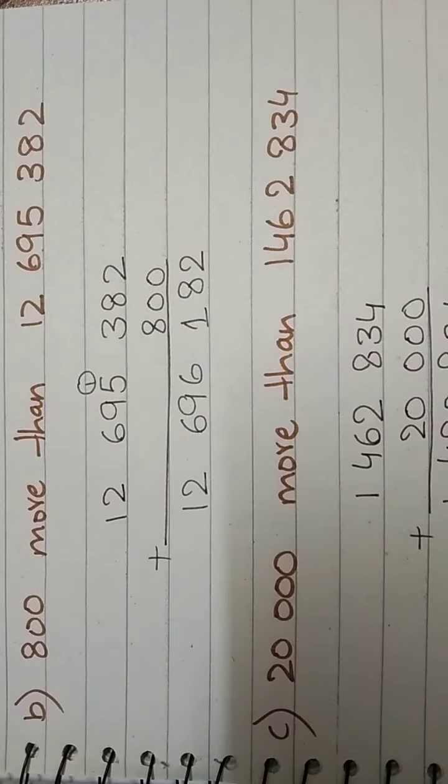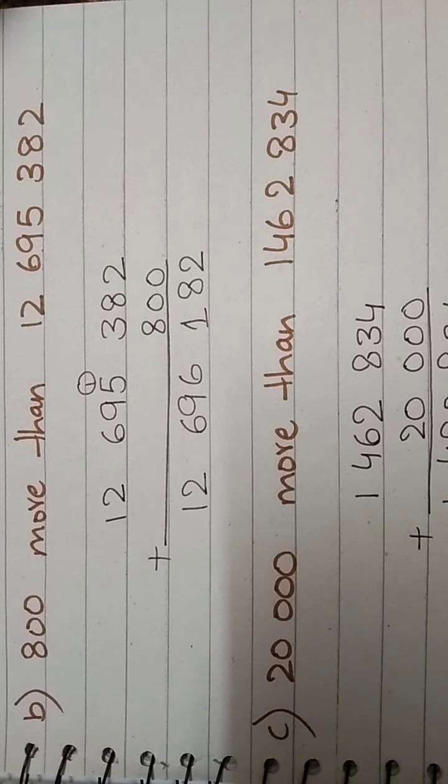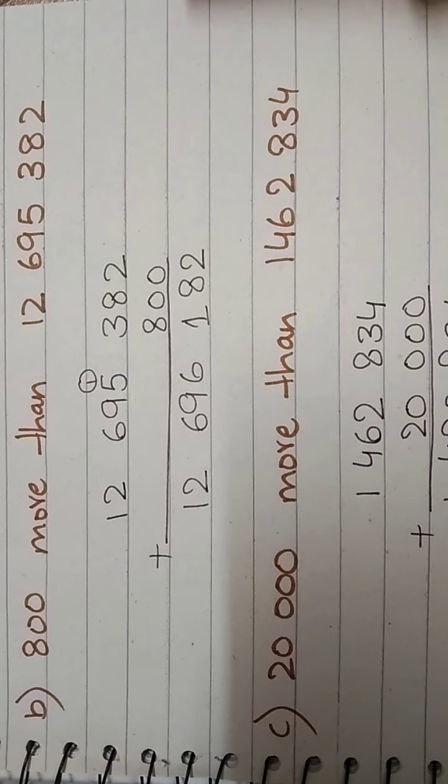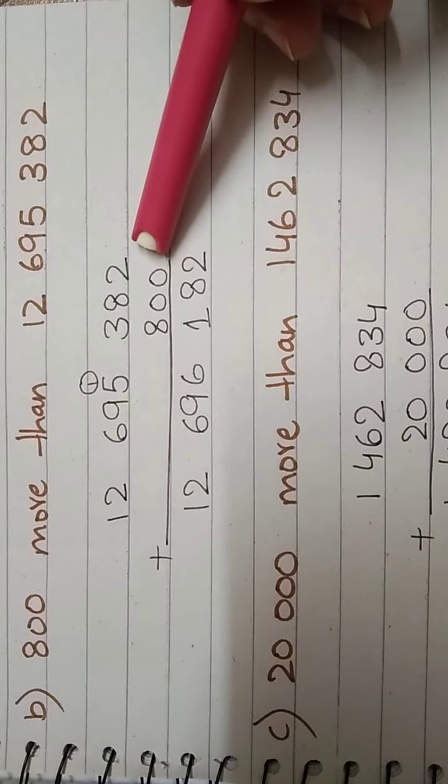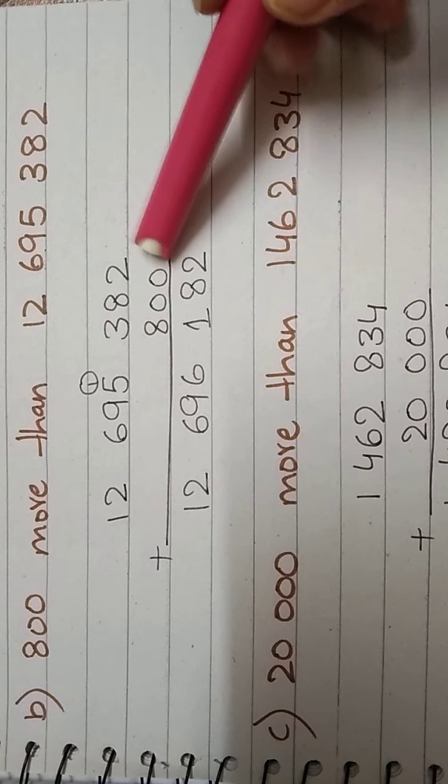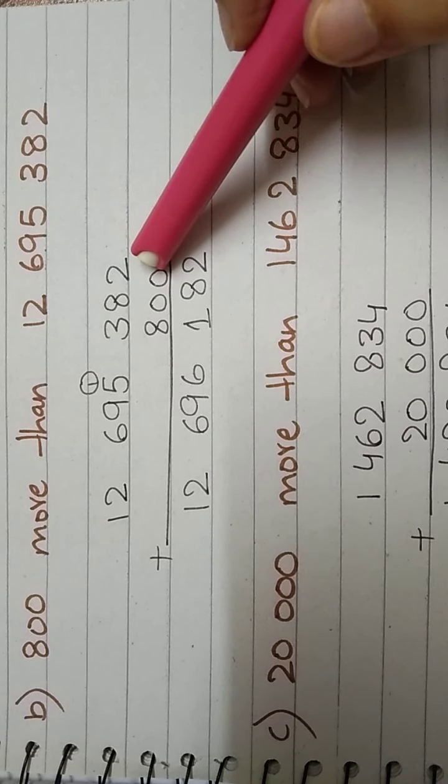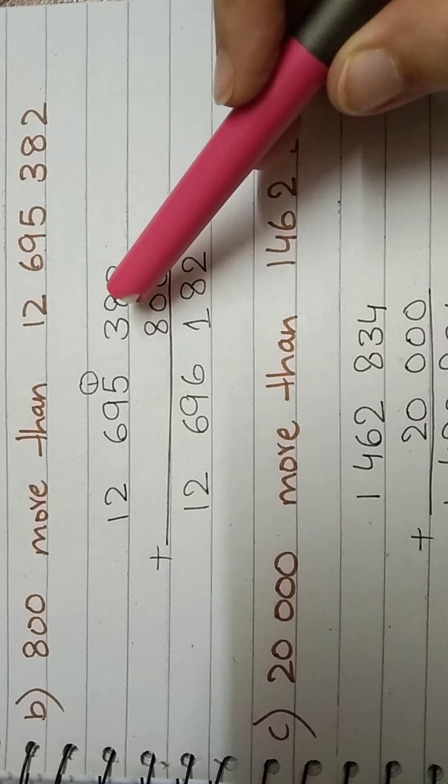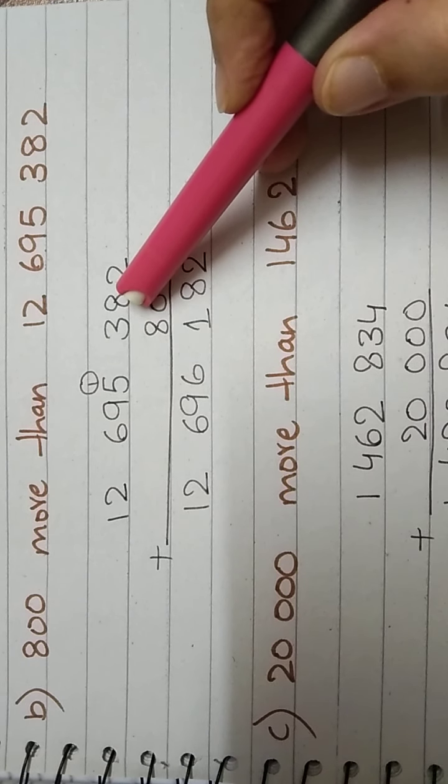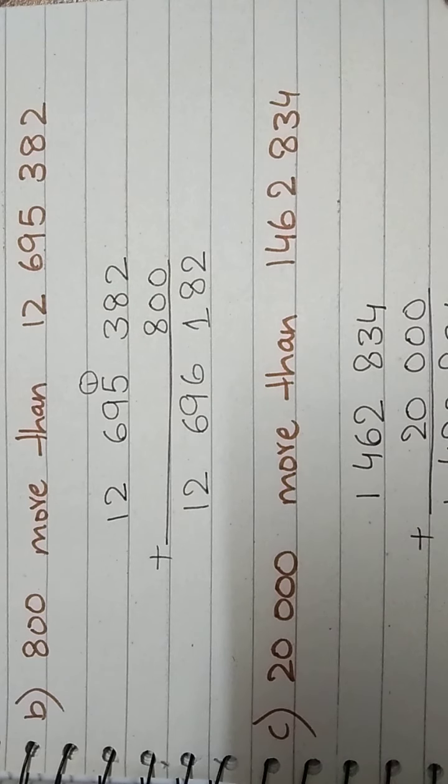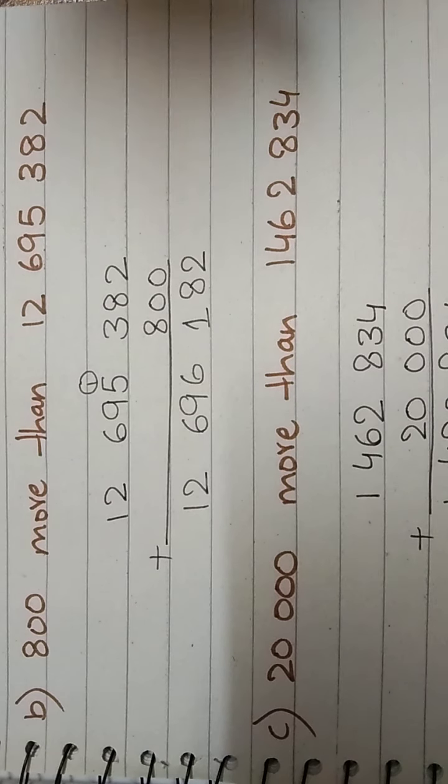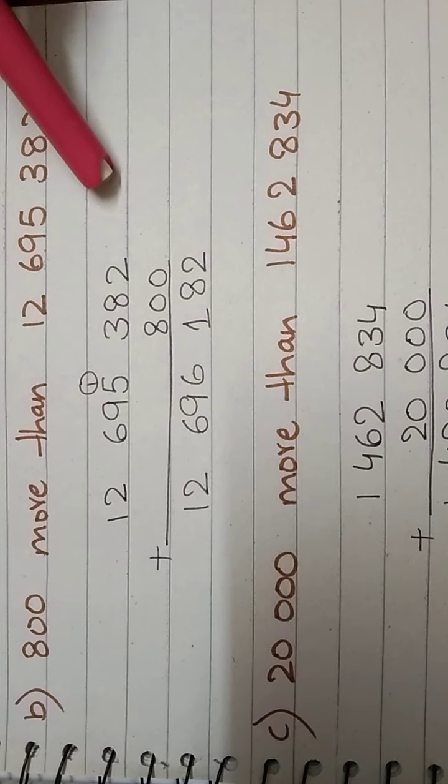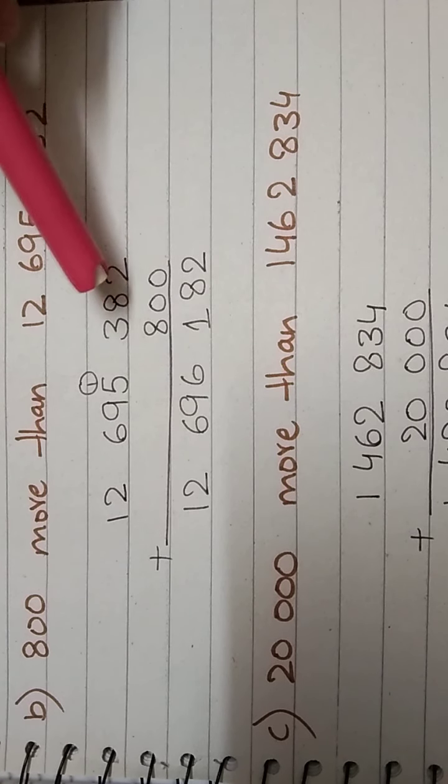Now let's do part B. In part B, we have 800 more than this number. We have written the numbers vertically. Let's start from the units side. We have 2 plus 0 equals 2.